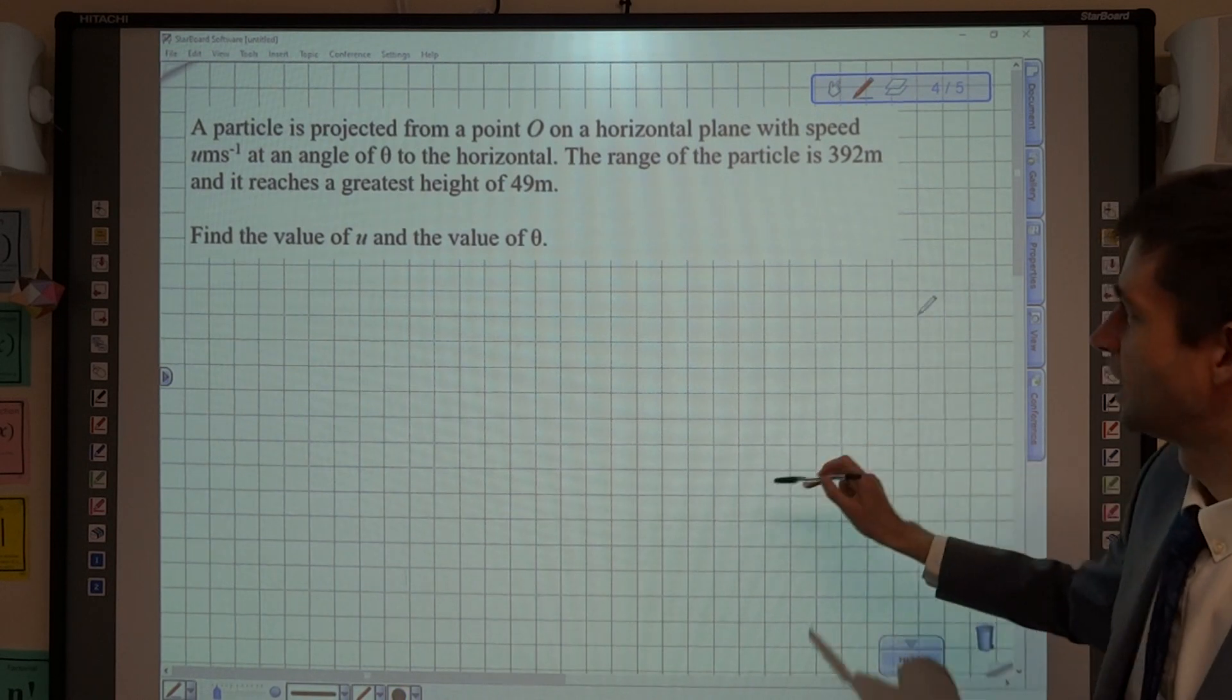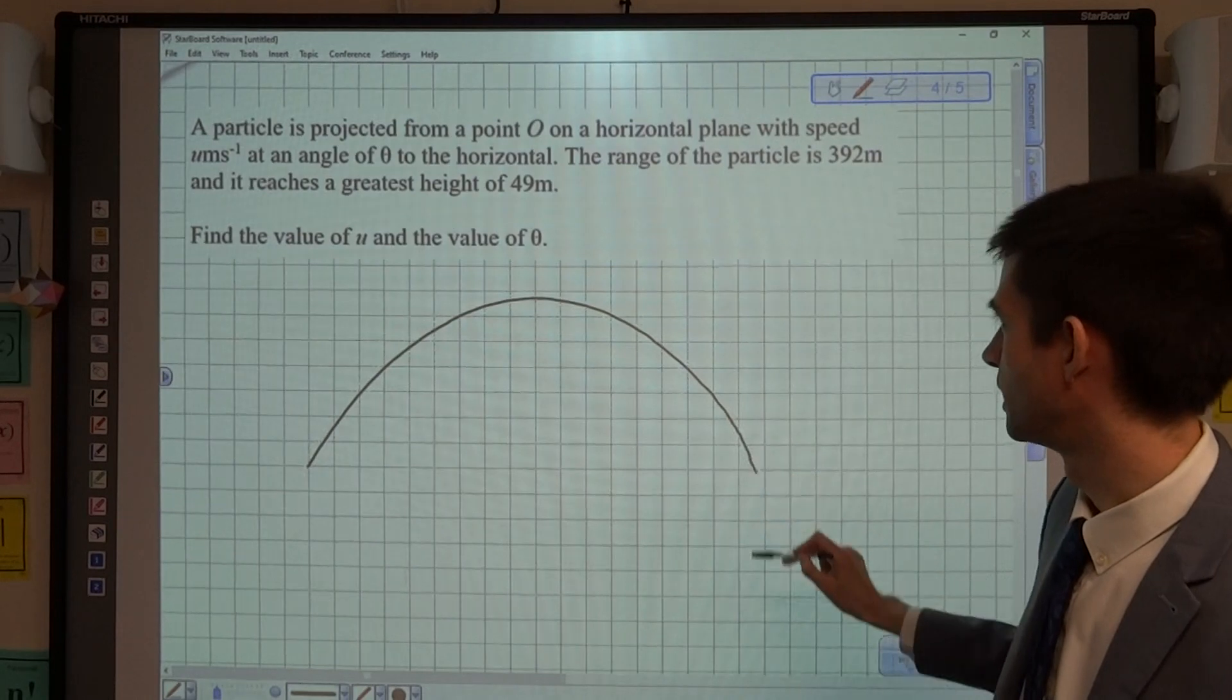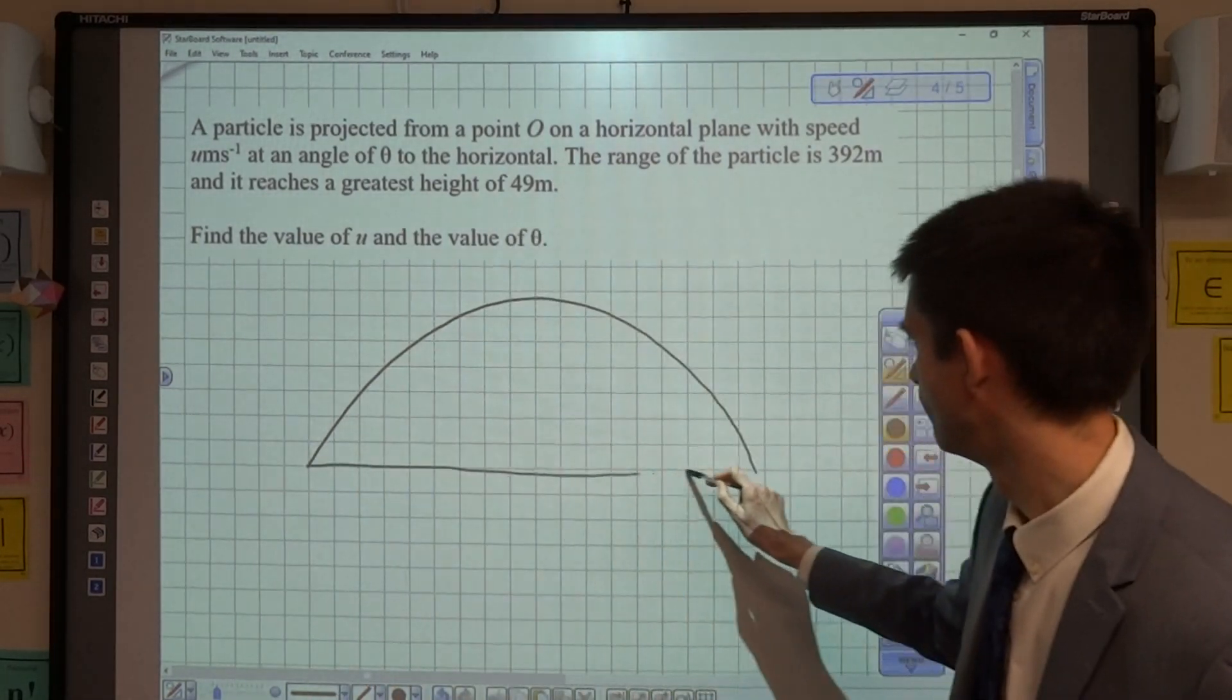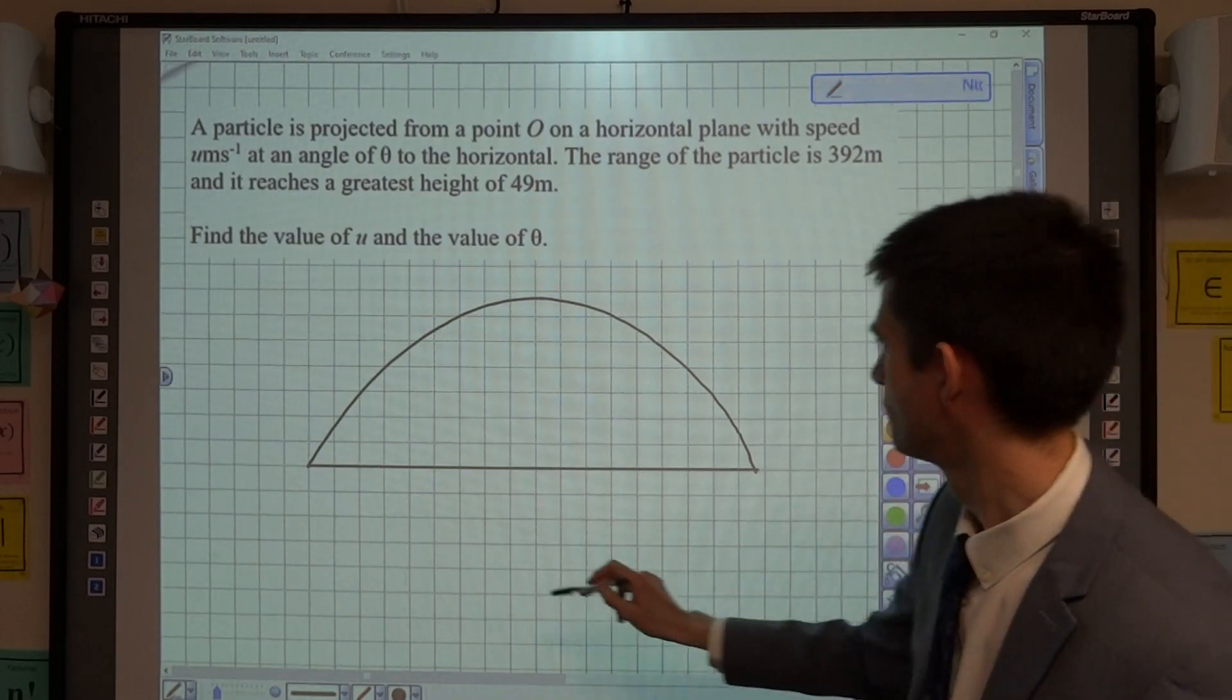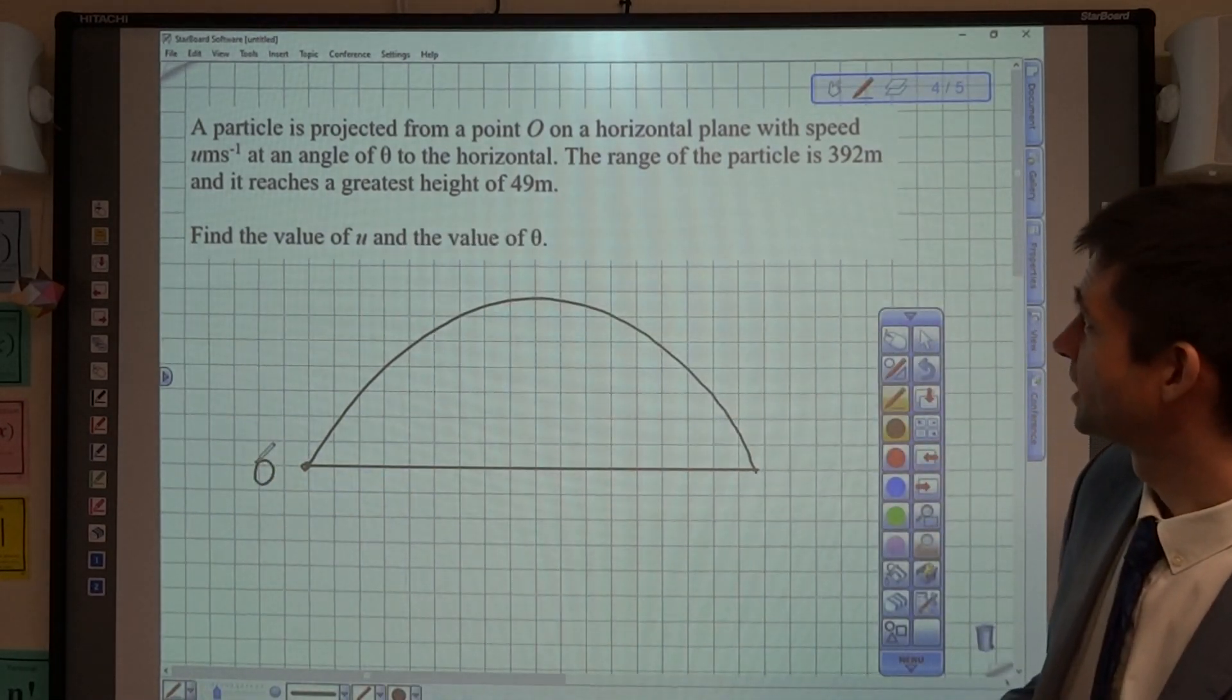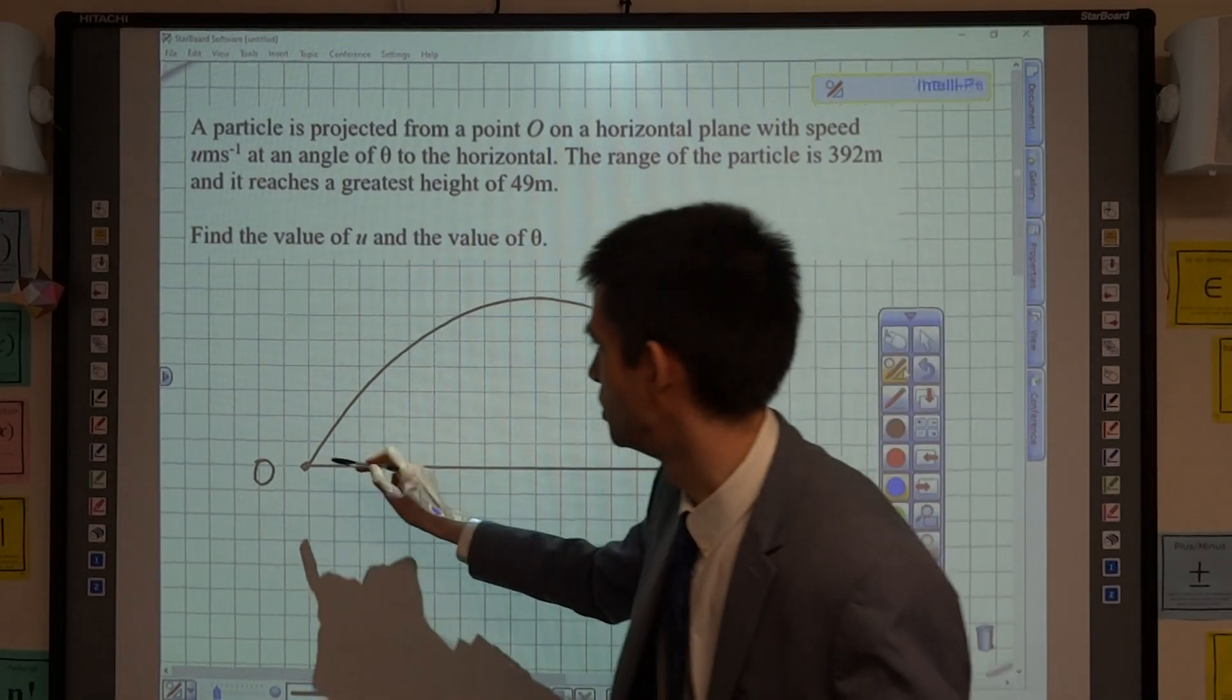Let's just start with a quick diagram of what we've been given. So we've got a projectile like so. There's the distance along the ground. We'll call this the point O, where it's being projected.